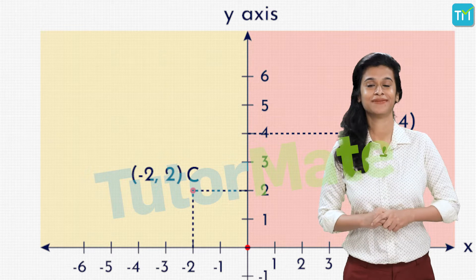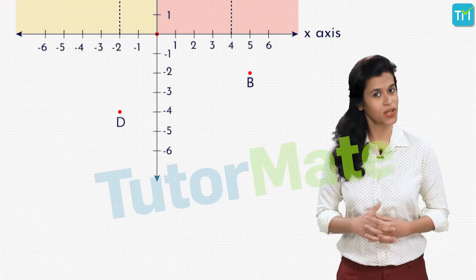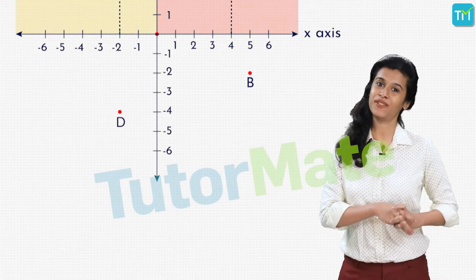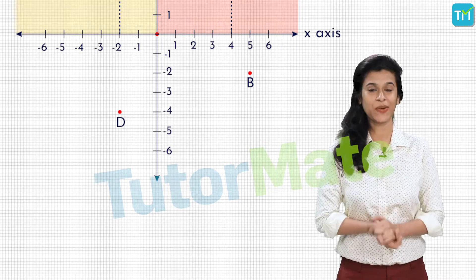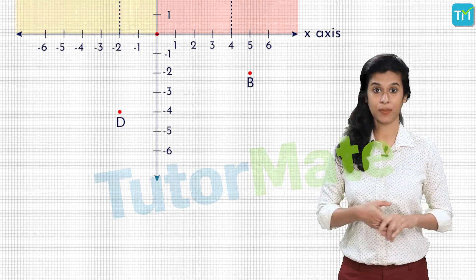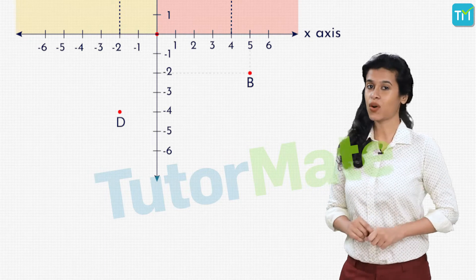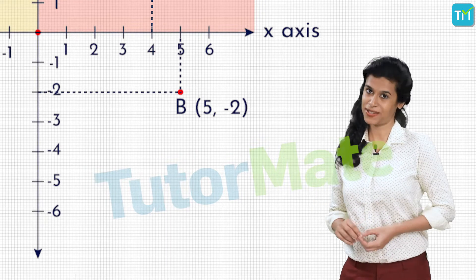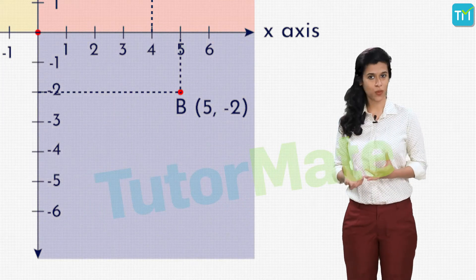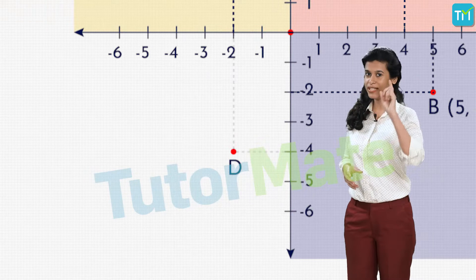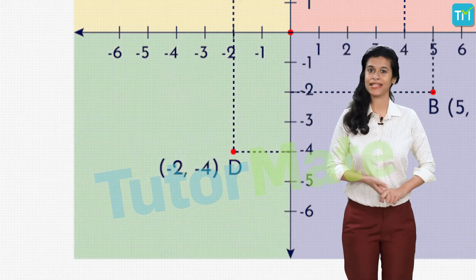Can you now look at points B and D and determine their coordinates? You can pause the video and figure it out. The coordinates of B are (5, −2), and point B lies in the fourth quadrant. The coordinates of D are (−2, −4), and D lies in the third quadrant.